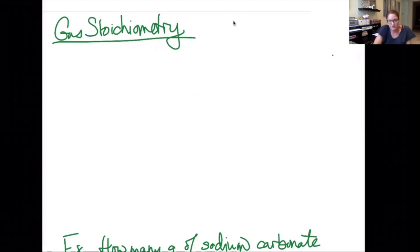Now we're going to do some gas stoichiometry problems. A gas stoichiometry problem is going to be one where we give you the grams of something and ask you to find the volume, or we give you the volume of a gas and we ask you to find the grams of a different thing within the reaction.